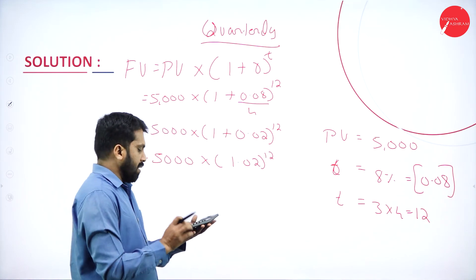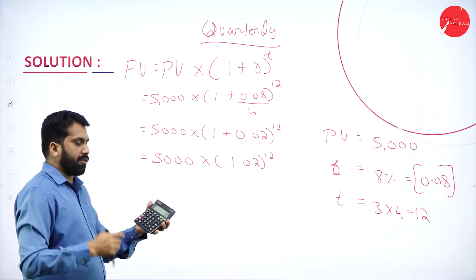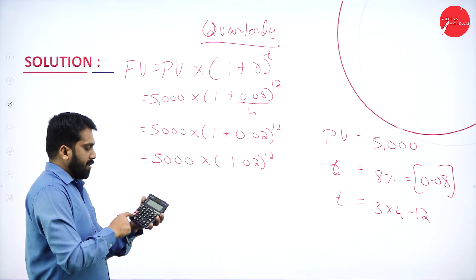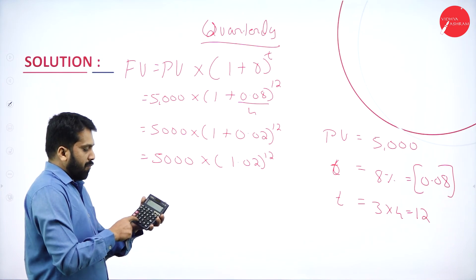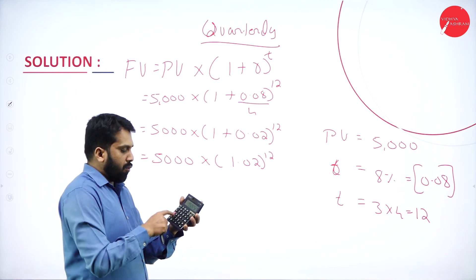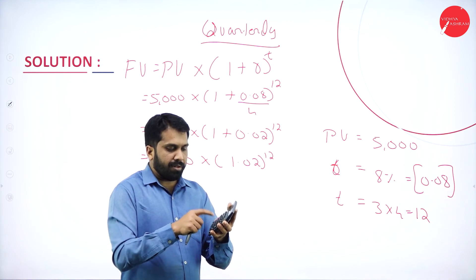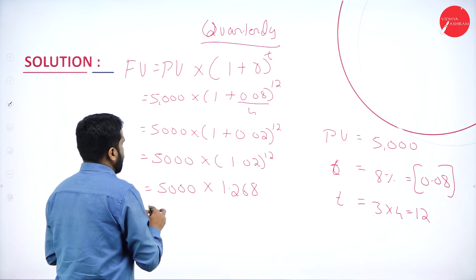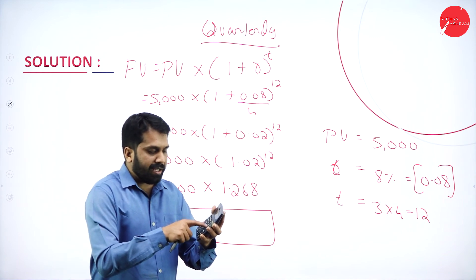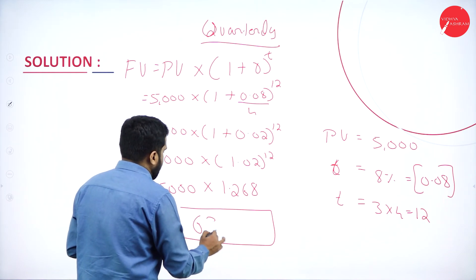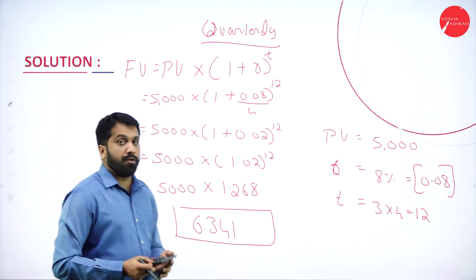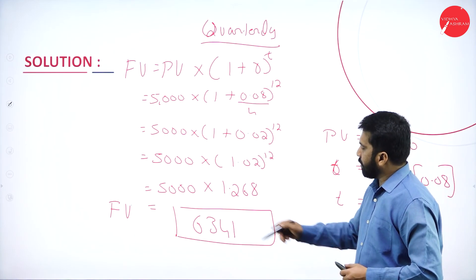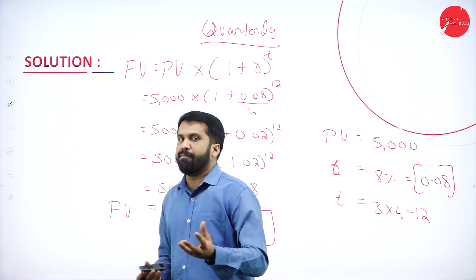Calculate (1.02)^12 by multiplying 1.02 twelve times. The result is approximately 1.268. Therefore FV = 5,000 × 1.268 = 6,341 rupees. On yearly basis it was 6,298 and on quarterly basis it is 6,341 — a difference of about 43 to 44 rupees, which is expected and acceptable.